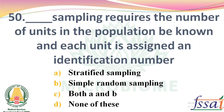Dash sampling requires the number of units in a population to be known, and each unit is assigned an identification number. Options: Stratified sampling, Simple random sampling, Both A and B, None of these. The right answer: Option B, Simple random sampling.